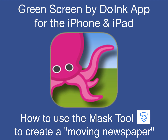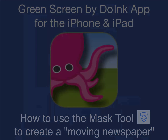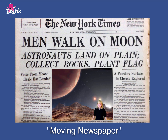The Green Screen by Doing app enables users to mask out, otherwise known as erase, portions of an image so that what is underneath the mask is then made visible. This can be done with both photos or videos. In this example, we're going to show how to create a moving newspaper, just like what you would see in the Harry Potter movies.